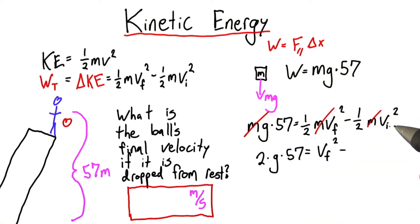And don't forget that the initial velocity was 0, since it was released from rest. Now we have this equation. I just take the square root of both sides, and I get a final velocity of 34 meters per second.